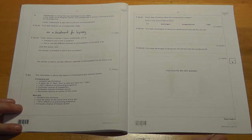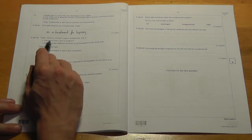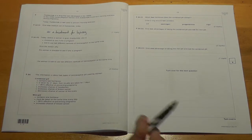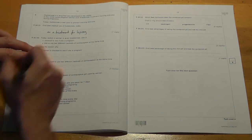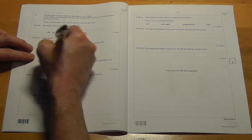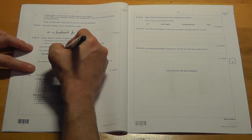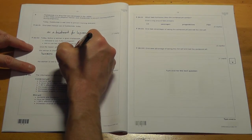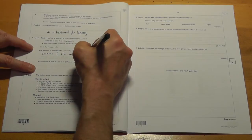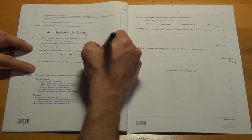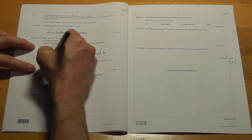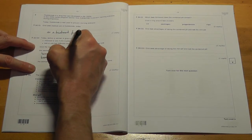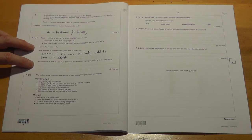Today, before a woman is given Thalidomide, she is checked to see if she is pregnant and told to use two different methods of contraception at the same time. Give the reason why the woman is checked to see if she is pregnant. Because if she were, her baby could be born with defects. That's what the problem with Thalidomide was. It led to babies being born with defects, with malformed limbs.